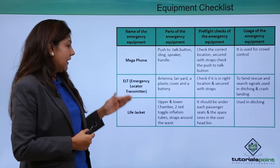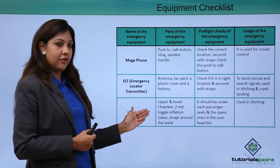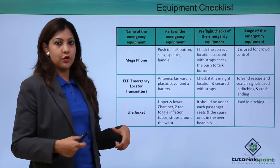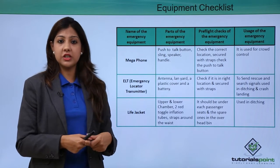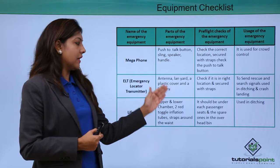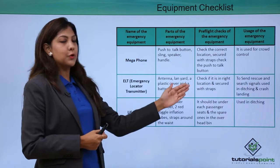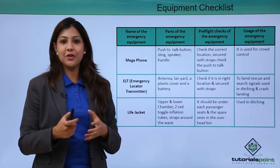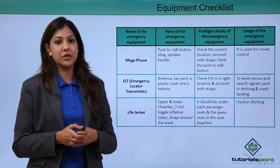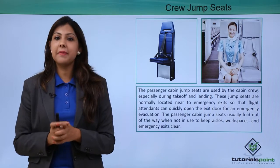The life jacket has an upper and lower chamber, two red toggle inflators, and tube straps to secure around the waist. Its location must be under each passenger seat, and under the jump seat for crew. Importantly, a life jacket is only used during water ditching — it is never used when the aircraft crashes on land.